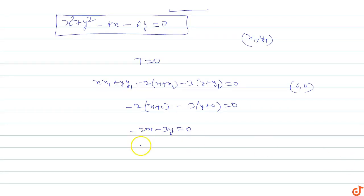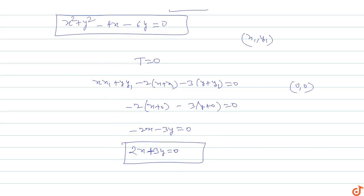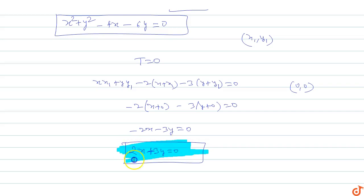Multiplying through by -1, the equation of the tangent to the circle from the origin is 2x + 3y = 0. So this is the final answer for this question.